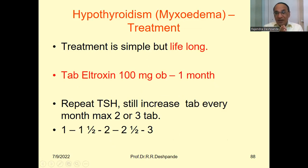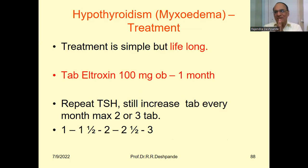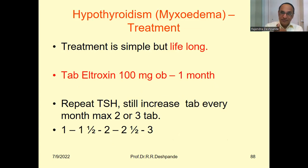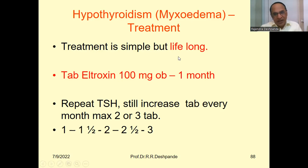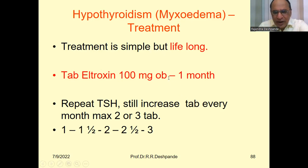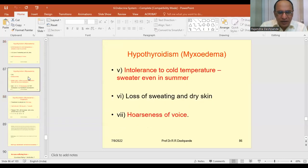The treatment for hypothyroidism is simple but unfortunately lifelong — the patient must take medicine for the whole life. As an Ayurvedic doctor, combining allopathic and Ayurvedic treatment may help reduce the treatment period by addressing underlying problems in body cells. According to allopathy, a thyroid hormone supplement is needed lifelong: tablet Eltroxine 100 micrograms, once daily for one month.